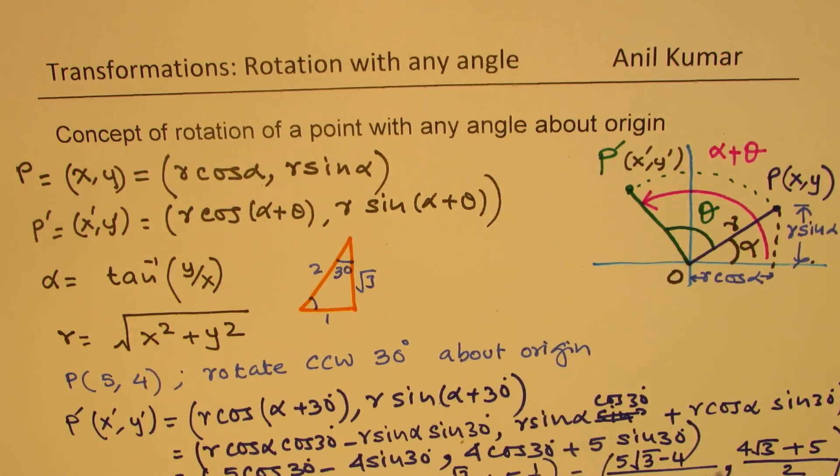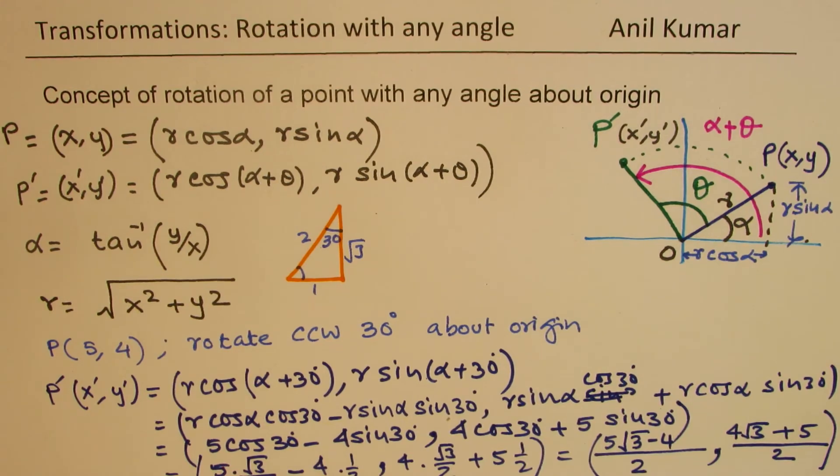So this becomes the point after rotation by an angle of 30 degrees. Does it make sense to you? So that is how you could actually find the rotation with any given angle about origin, using compound angle formula is the key. So I hope this concept is absolutely clear.